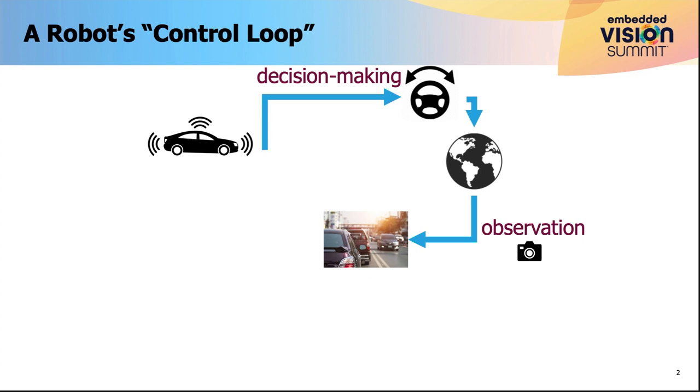And these observations might give it information about what the state of the road in front of it is, at which point this information needs to be condensed into something like a representation. We normally think of representations as being matrices or vectors of some sort that can then inform future decisions for what this robot should do.